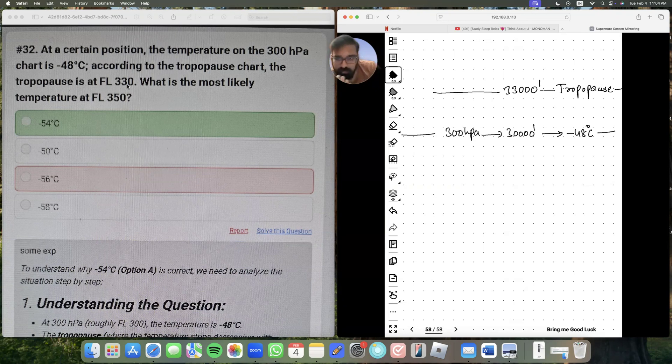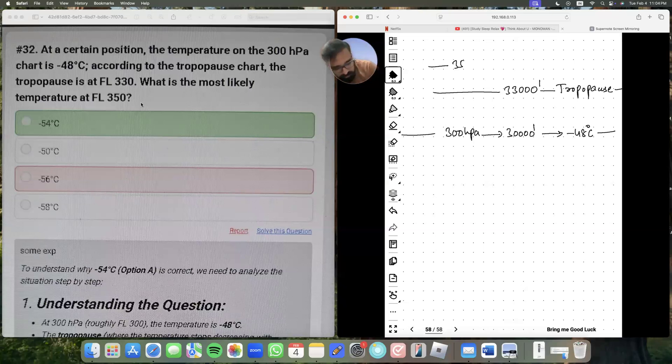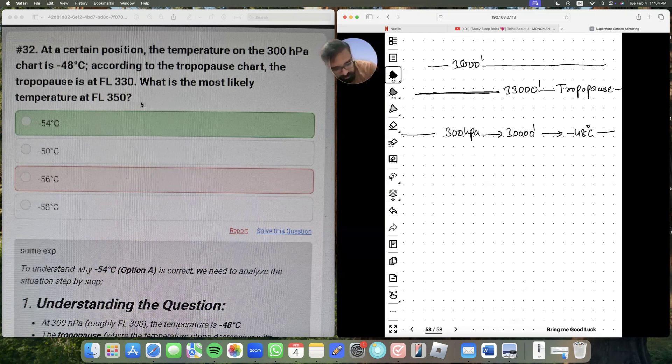Now this guy who set this question paper is intelligent. He just said, where is the tropopause? And he is asking, what is the temperature at flight level 350? That is at 35,000 feet. Now this question depends on your knowledge. What happens about tropopause?